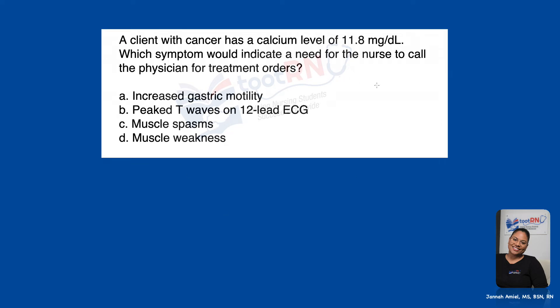It says: a client with cancer has a calcium level of 11.8 milligrams per deciliter. Which symptom would indicate a need for the nurse to call a physician for treatment orders? Option A says increased gastric motility. Option B says peaked T waves on 12-lead ECG. Option C says muscle spasms. And option D says muscle weakness.